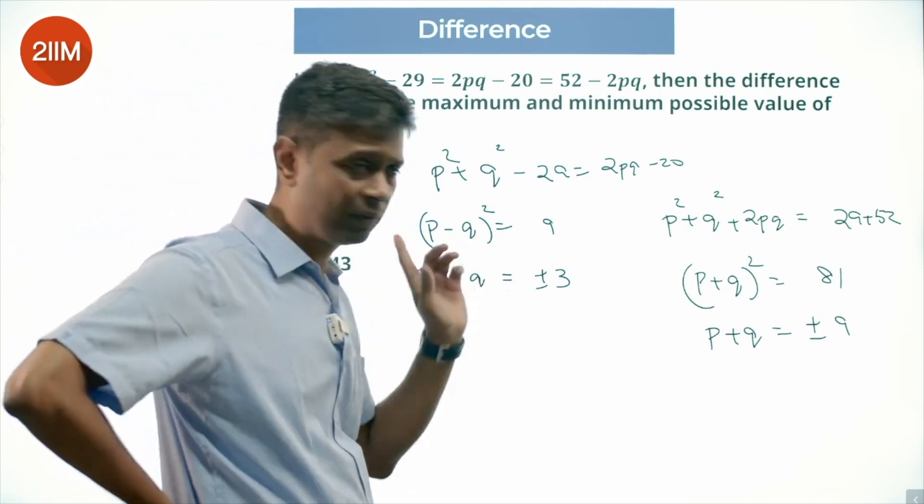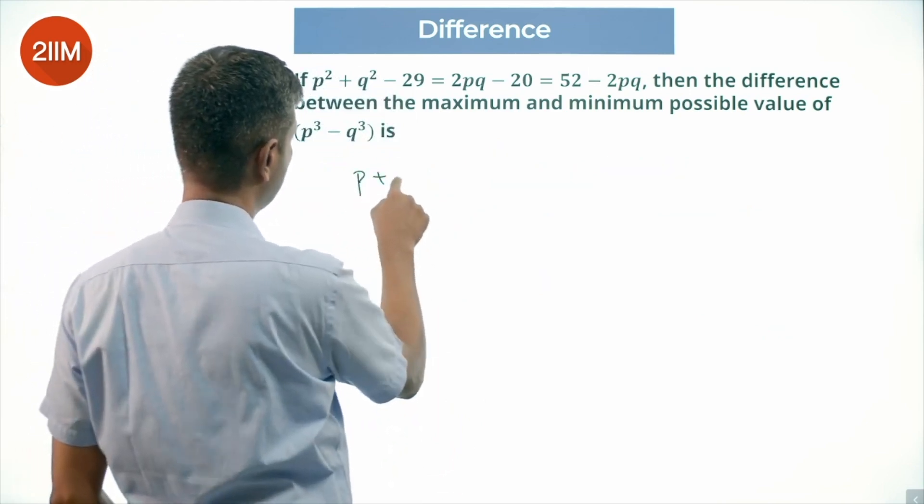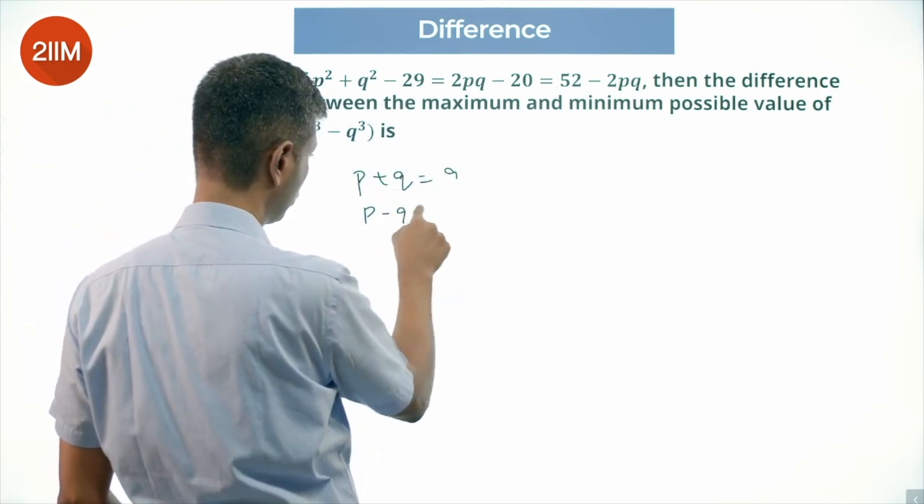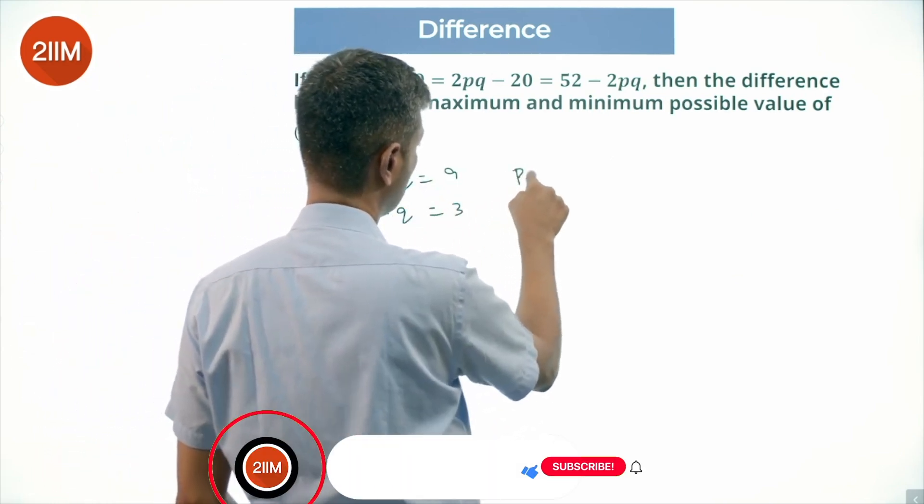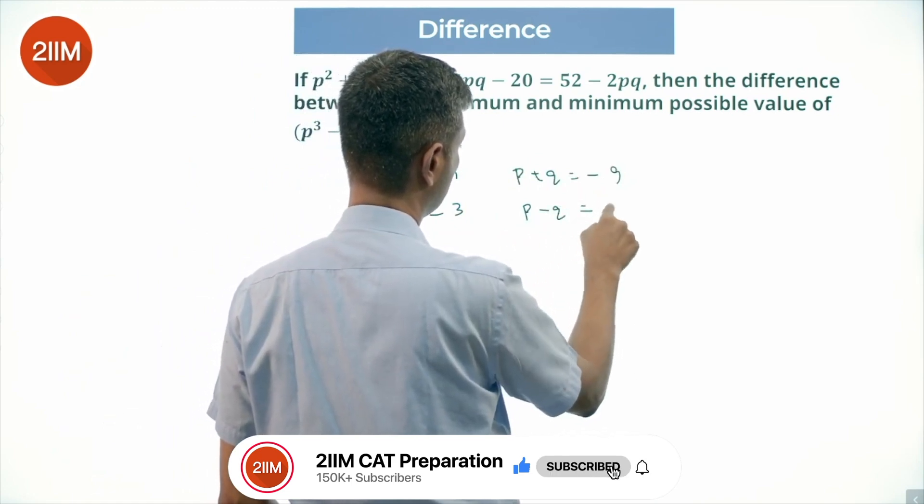It's a pain because there are multiple values going to be possible. What I am going to do? I am going to just brute force it. I am going to say P plus Q equal to 9, P minus Q equal to 3, P plus Q equal to minus 9, P minus Q equal to minus 3.